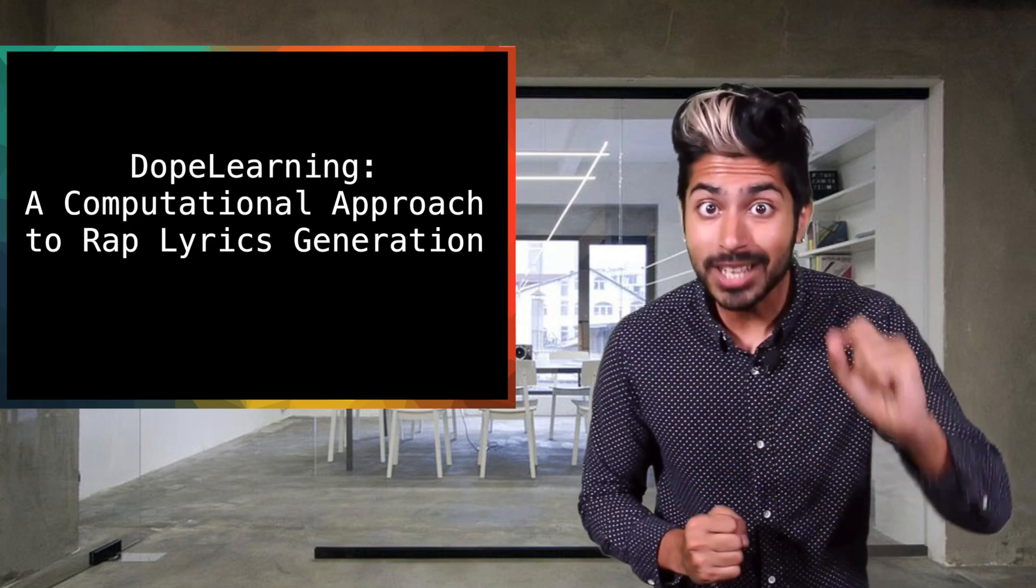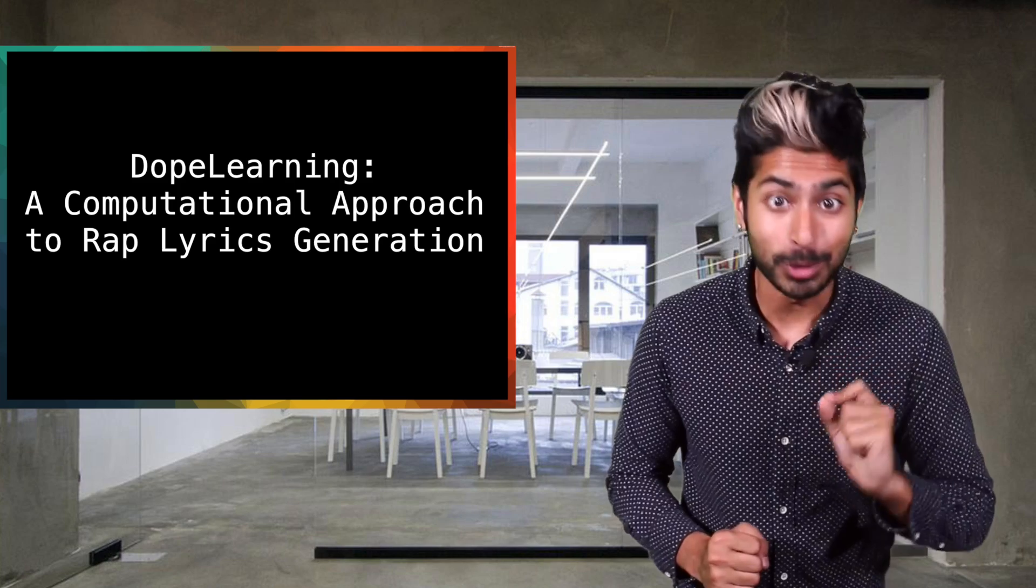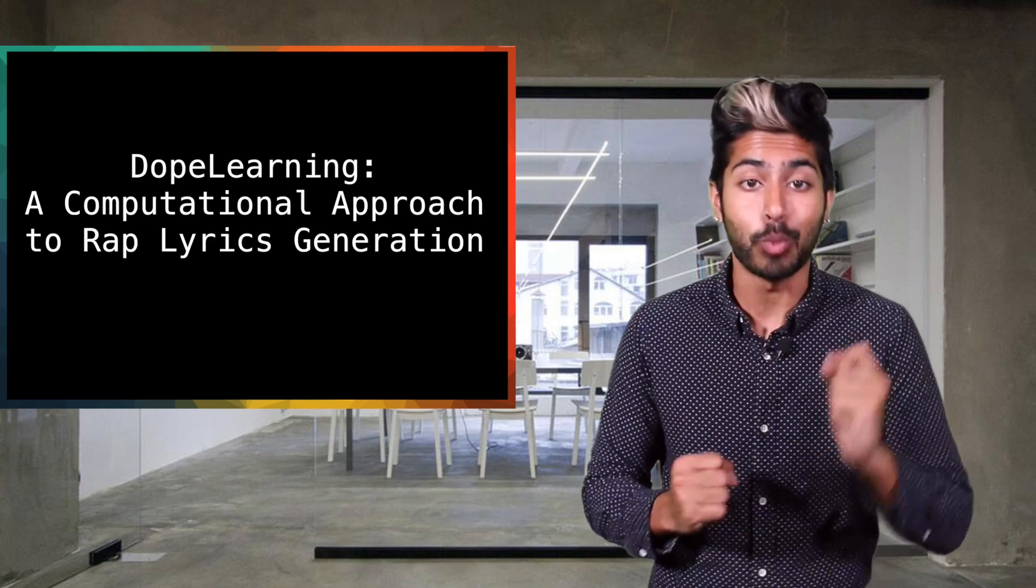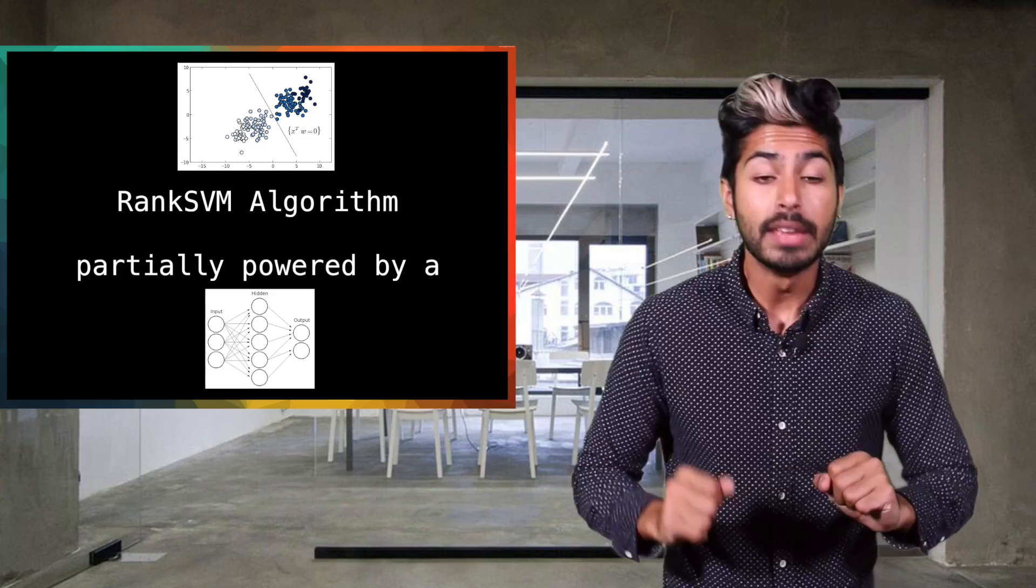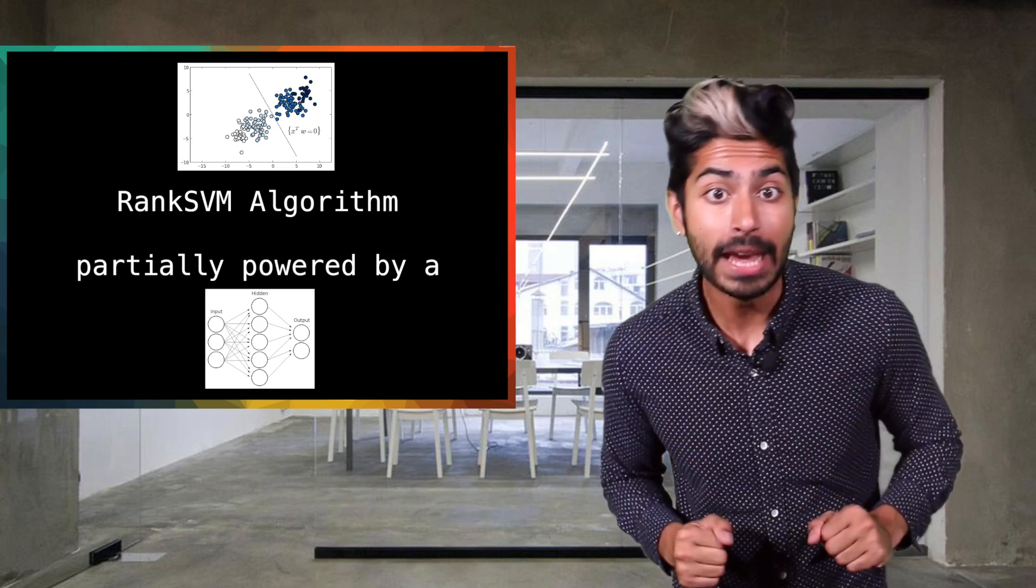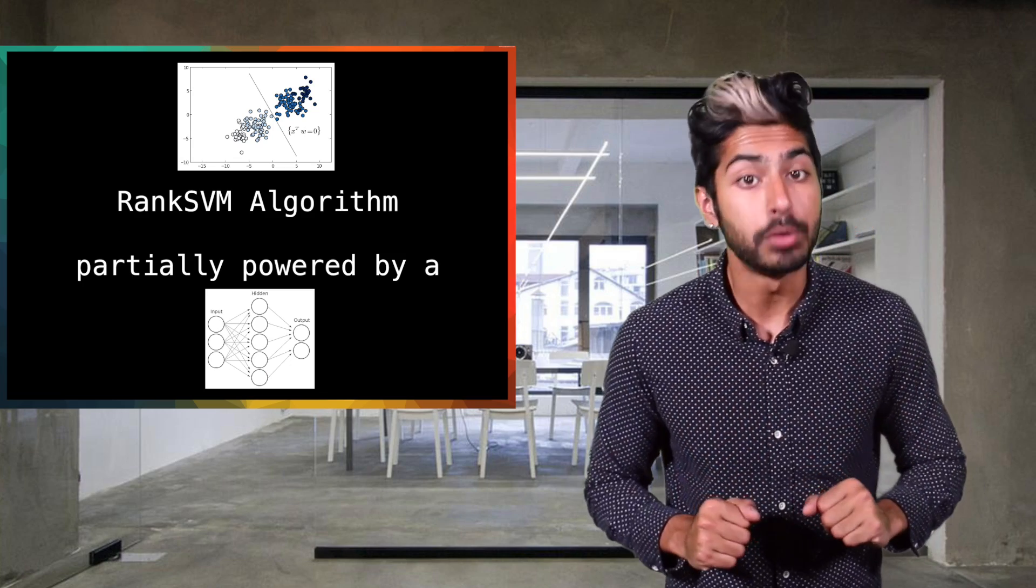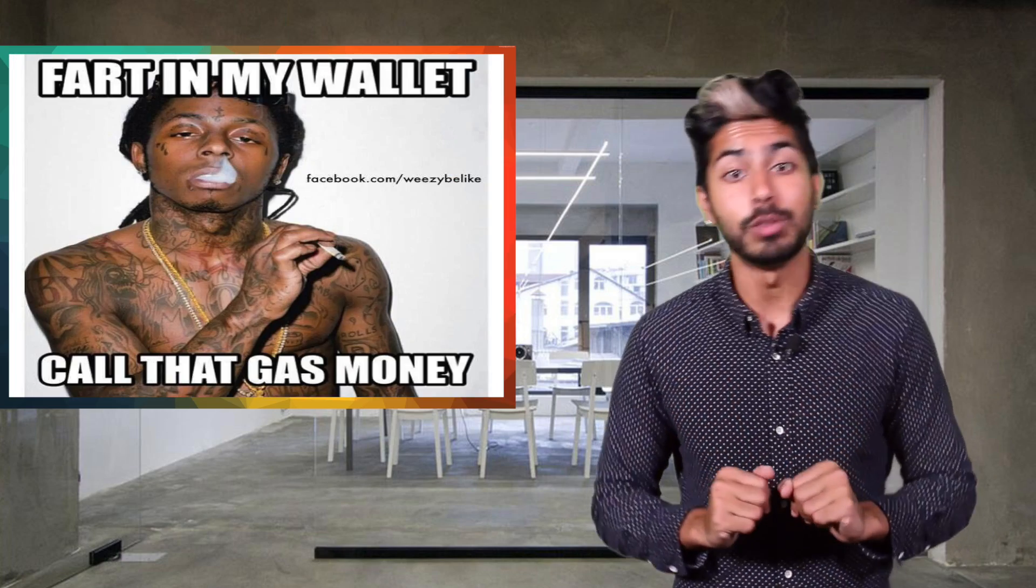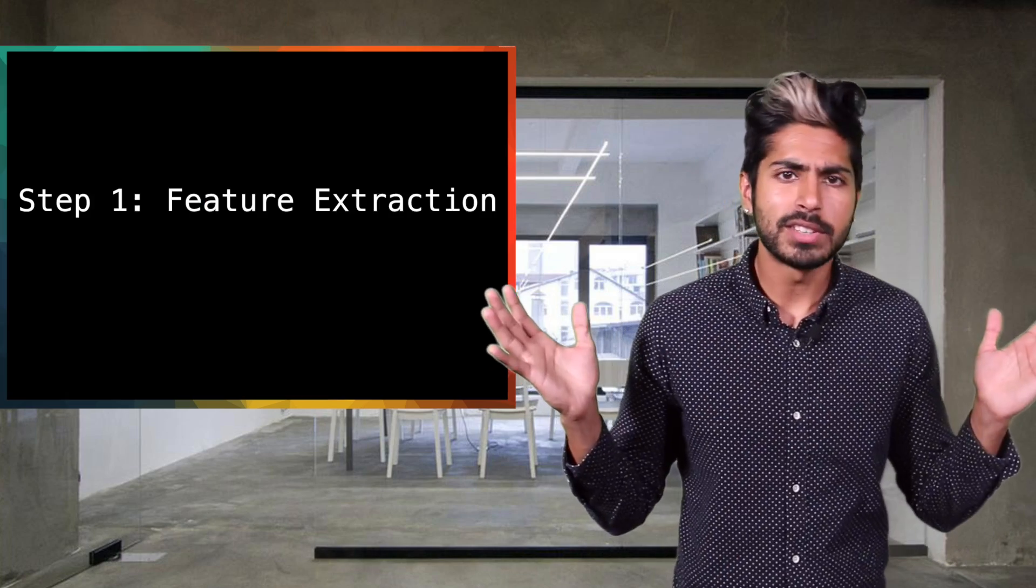A group of researchers published a paper just last month called Dope Learning, A Computational Approach to Rap Lyrics Generation. Legendary. They used an algorithm called Rank SVM, which was partially powered by a deep neural network, and they fed it a data set of all the songs from the top 100 English speaking rap artists. No idea how Lil Wayne got on that list. So how does this algorithm work?